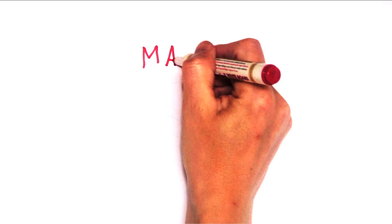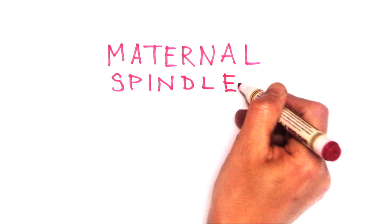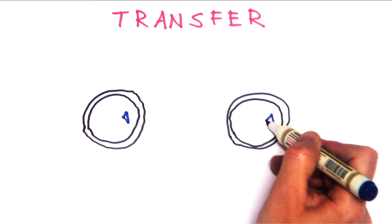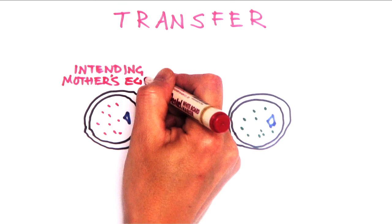The first treatment is called maternal spindle transfer. It works like this. You begin with the intending mother's egg and a healthy donor egg.